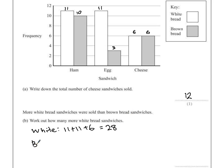For the brown bread sandwiches, we have 10, add 3, add 6. Putting those together means there were 19 brown bread sandwiches sold. So the difference between these two, you just take one away from the other. 28 take away 19 is going to leave you with 9.